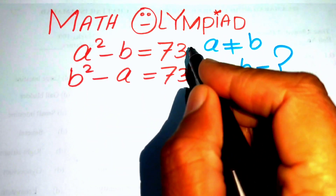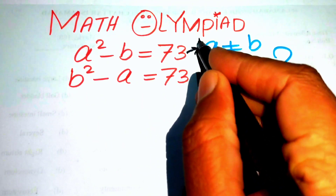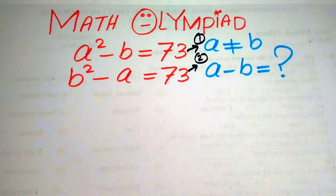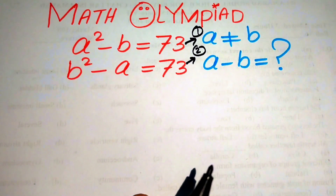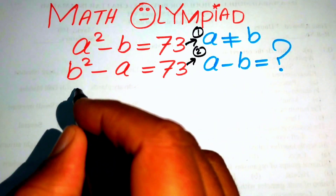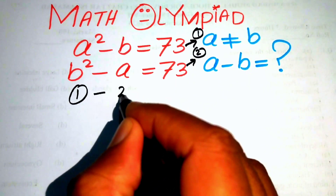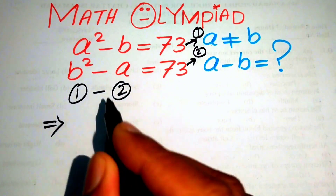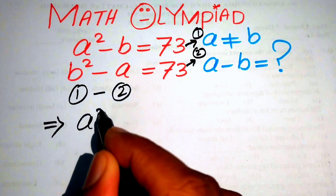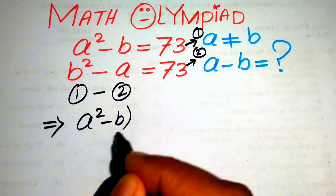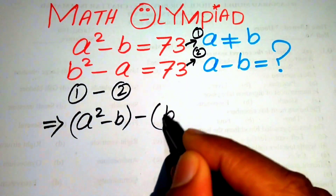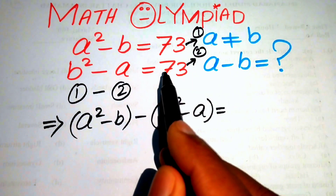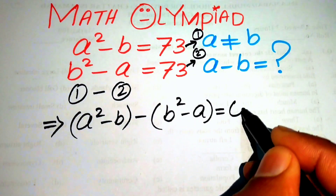First, we call the first expression equation number one and the second expression equation number two. The very first step is to subtract equation number two from equation number one, so when we subtract these two equations we obtain: a squared minus b minus (b squared minus a) equals 73 minus 73, which gives us zero.